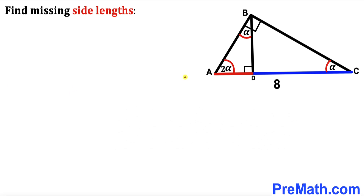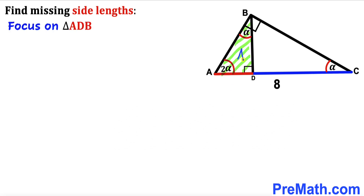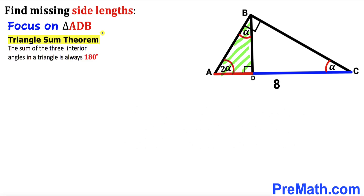Our very first step is to find the value of angle alpha. Let's focus on right triangle ADB and recall the triangle sum theorem: the sum of the three interior angles in a triangle is always 180 degrees. Inside triangle ADB, the angles are 90 degrees, alpha, and 2 alpha.